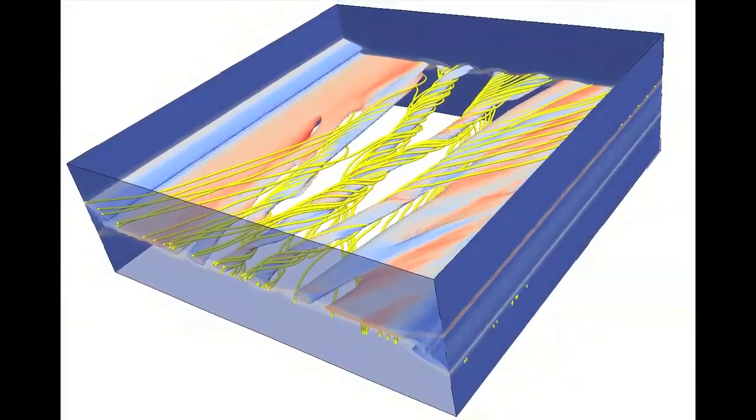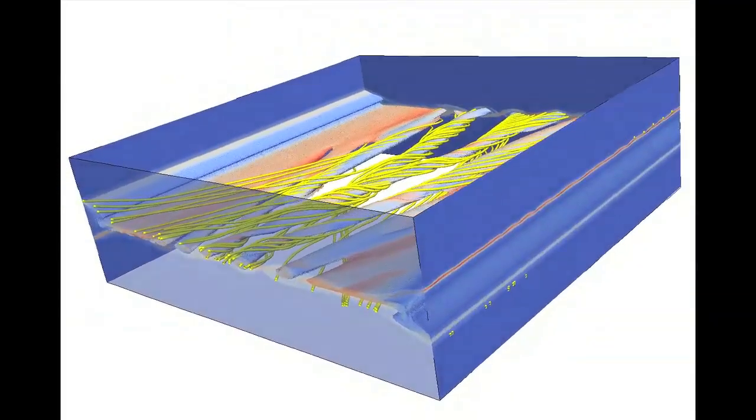What we're looking at in these movies is a simulation box that's centered around one of these thin boundary layers, in order to look at the kinetic structure of these layers as they break up.